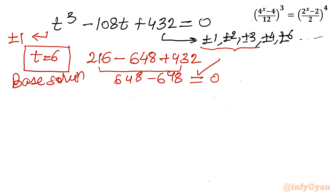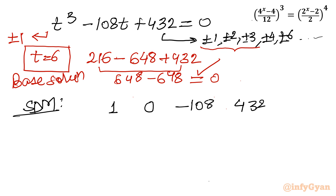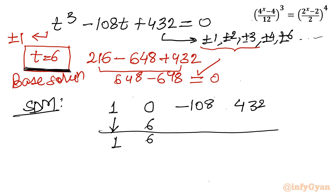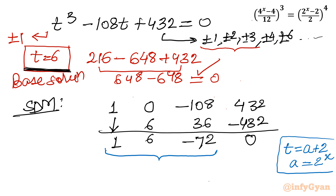Using synthetic division with root t = 6, we write coefficients 1, 0, -108, 432. Bringing down 1, then: 1×6 = 6; 0+6 = 6; 6×6 = 36; -108+36 = -72; 6×(-72) = -432; 432+(-432) = 0. The resulting quadratic is t² + 6t - 72 = 0.